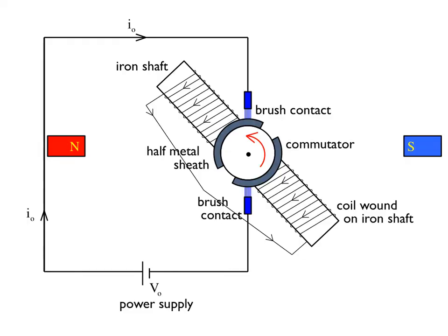So here's the basic schematic for a DC motor. You have a shaft with a coil wrapped around it. Attached to the coil are two half-metal sheaths that are mounted on a cylinder that's an insulator, so these guys are insulated from one another, and the cylinder is pinned so that the whole assembly can rotate about this axis.